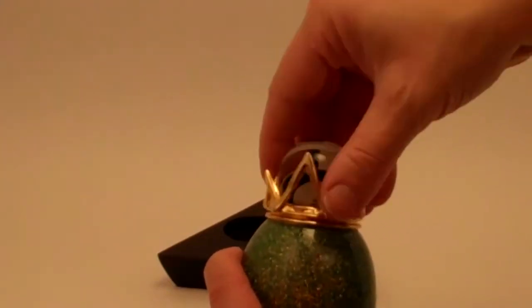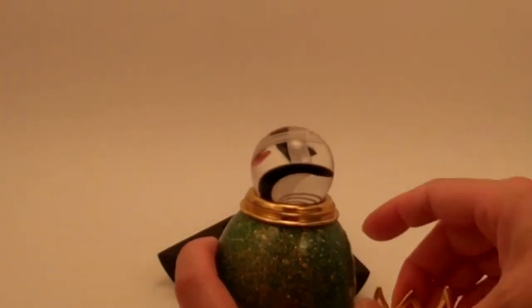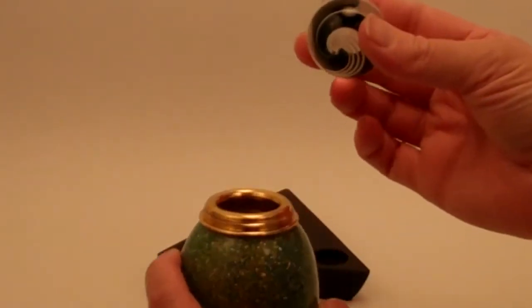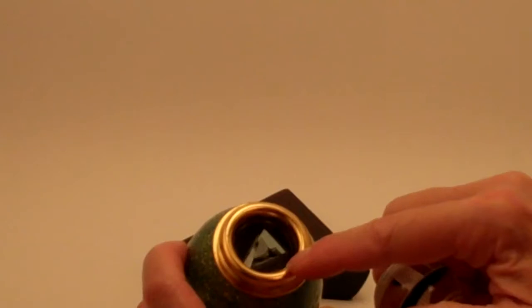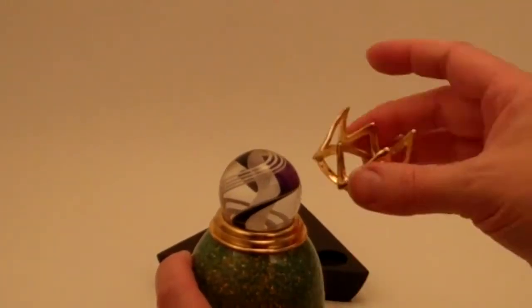You unscrew the crown, and it is the top points of the crown that actually hold the marble in place. Again, it is all sealed here with optical lens, and the marble rests right there on the top rim.